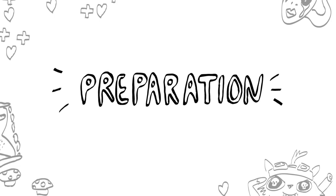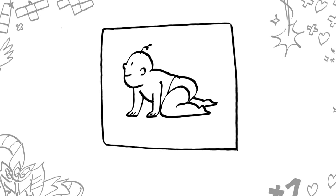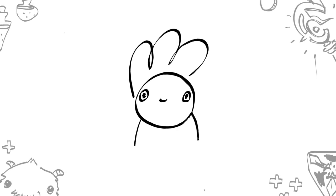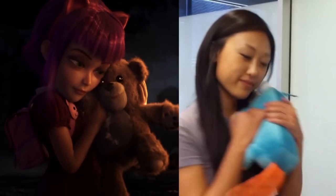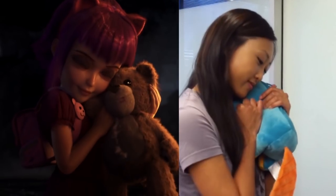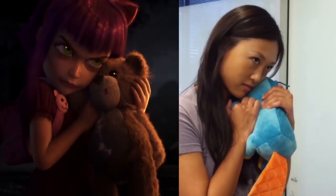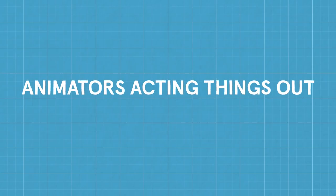Preparation is incredibly important for animating. Animators will frequently sketch out their ideas or do a bunch of research online. But oftentimes the best way to brainstorm an animation is to act it out yourself. If you're willing to look a little silly, it's a very fast and spontaneous way to create accurate reference for your animation. Let's check out some animators acting things out.